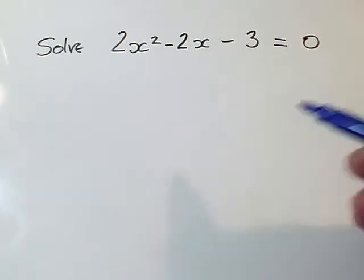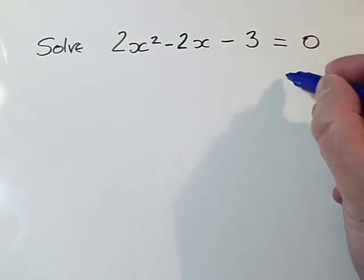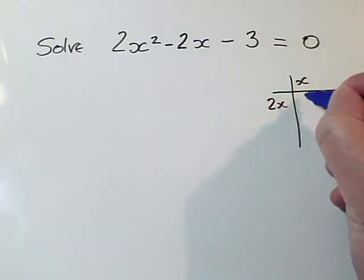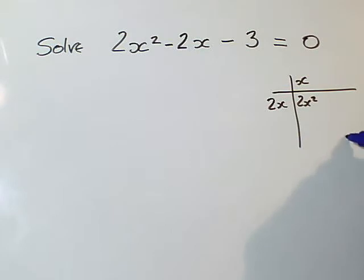The first thing you think about is, will this factorise? So you go off and do a little grid. 2x squared - I'm going to need an x and a 2x to make that 2x squared. And to make this minus 3, well, it could be 1 and minus 3, it could be lots of things. But whichever way you try and split up that minus 3, you never seem to be able to get this minus 2x.